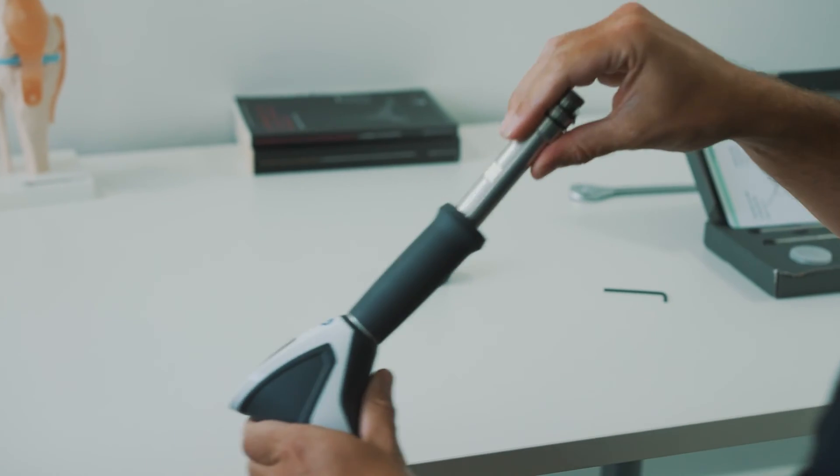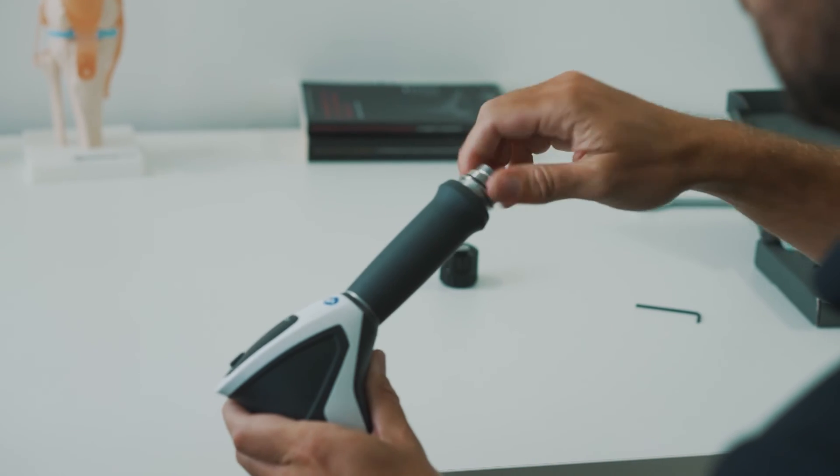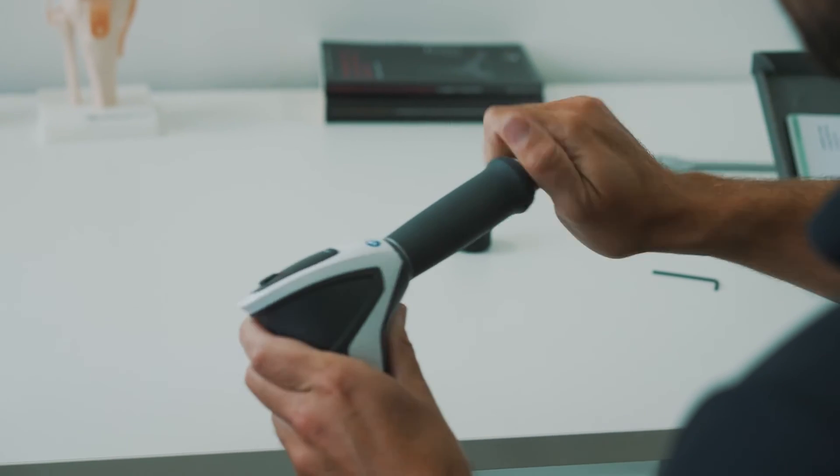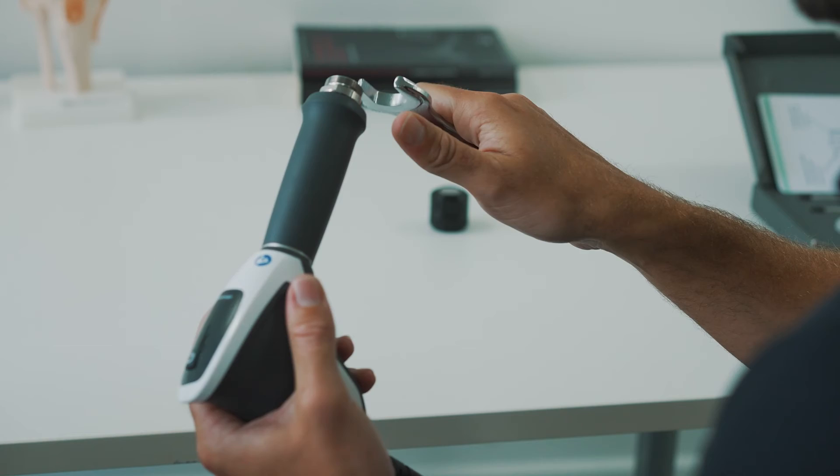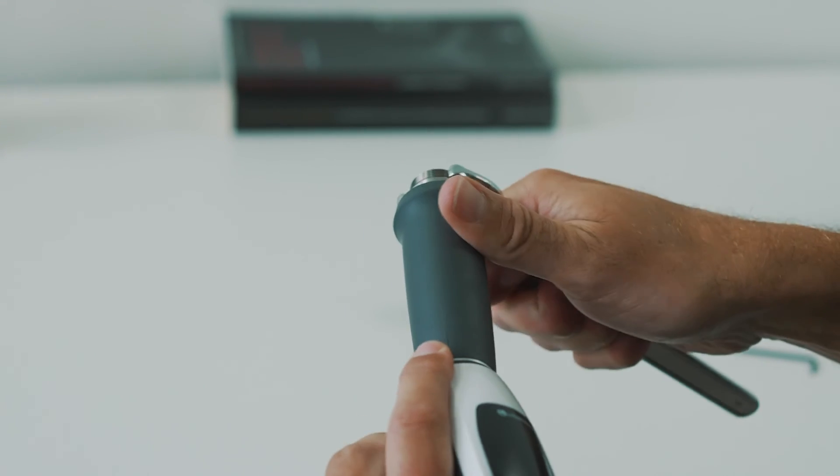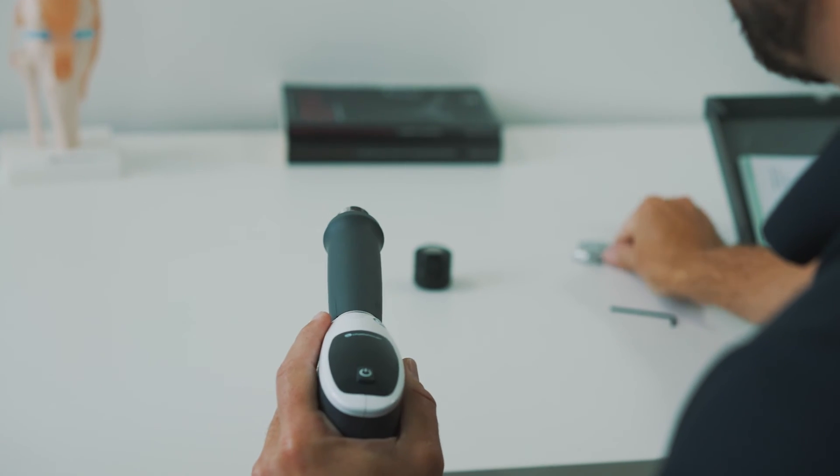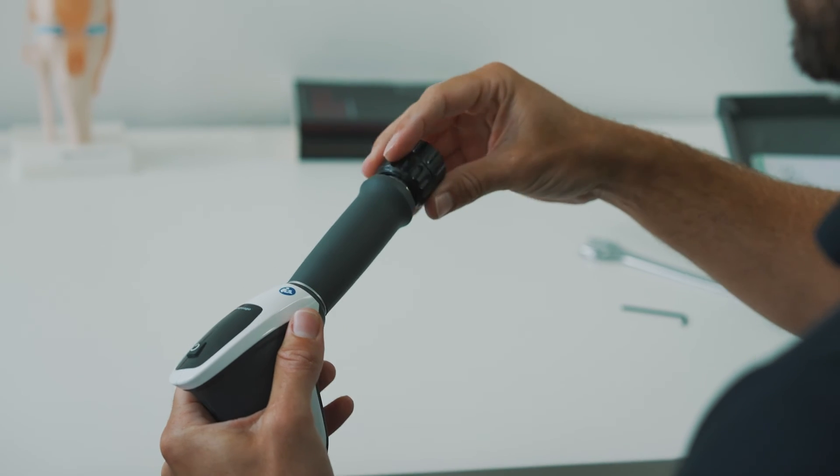Once you've done this, you can reattach the barrel to the handpiece and then use the spanner to tightly secure. Reattach the transmitter.